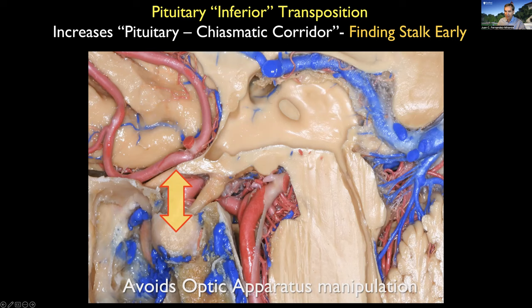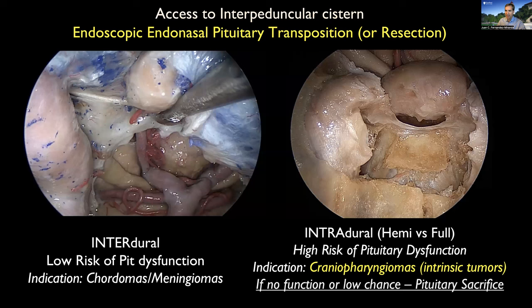In some cases, the pituitary gland has to be manipulated much more than just inferior displacement — it has to be transposed or even resected, as I'll show you. Pituitary transposition techniques have been described; we use the transcavernous or interdural approach mostly for chordomas, chondrosarcomas, and meningiomas. For craniopharyngiomas we use the intradural transposition technique, which can be on one side — hemitransposition — or on both sides — full transposition.